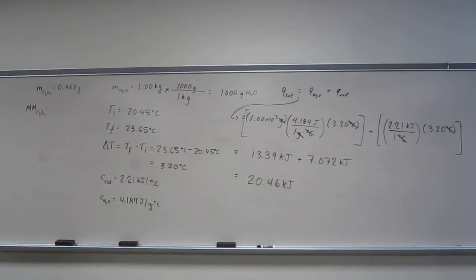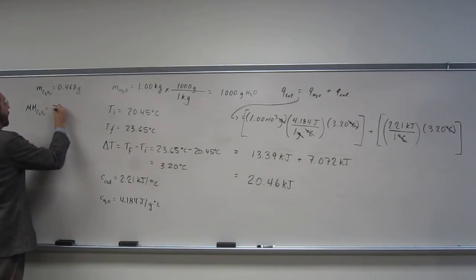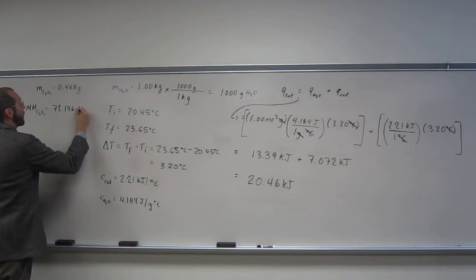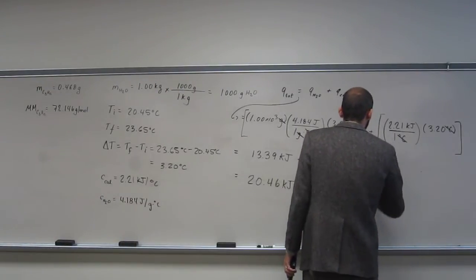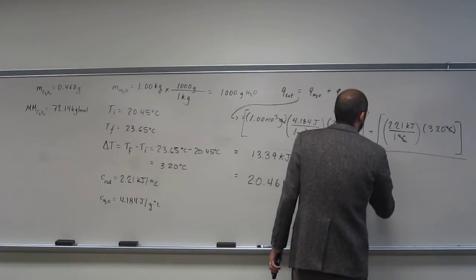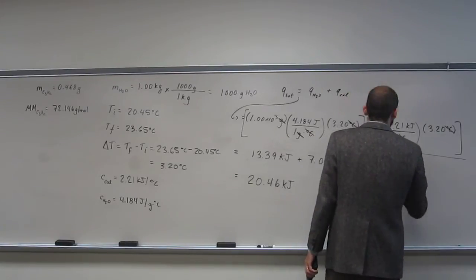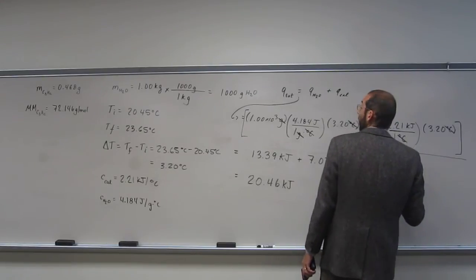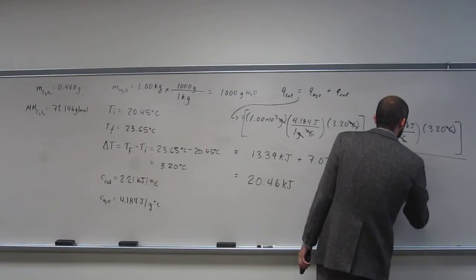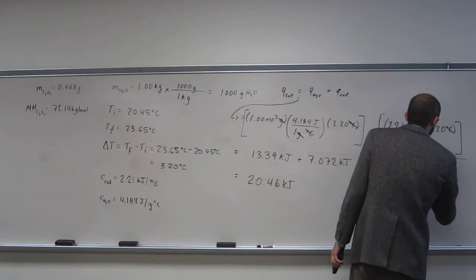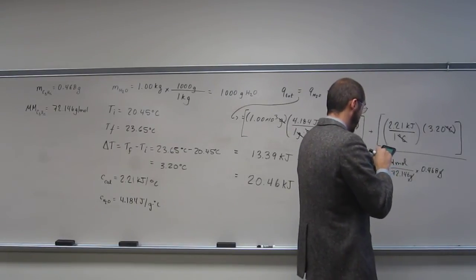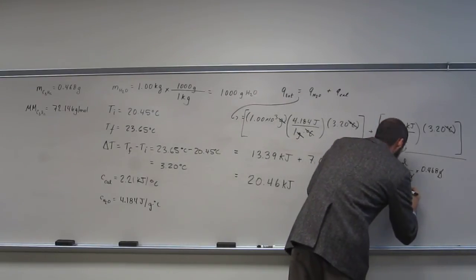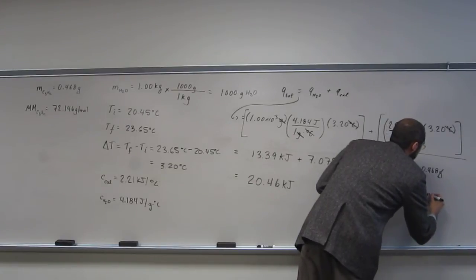So 12.01 times 5 plus 12 times 1.08, 72.146 grams per mole. So let's figure out the number of moles that we have. This is the calculation over here. Number of moles of pentane is going to be 1 mole over 72.146 grams times 0.468 grams. 6.49 times 10 to the negative third moles of pentane.